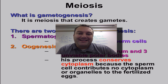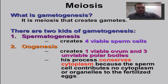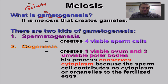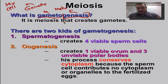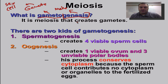The word gametogenesis is essentially telling you what's going on. 'Gameto' refers to gametes — a reproductive cell or sex cell. 'Genesis' pretty much means to make. Think of the book of Genesis in the Bible, when God created the world. So put it together: gametogenesis is a process that makes gametes. Gametes come in two flavors.